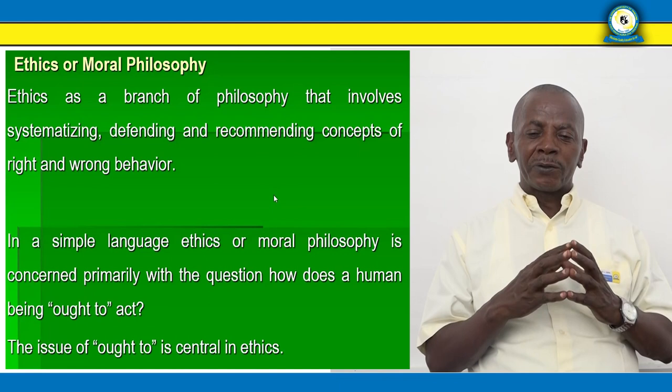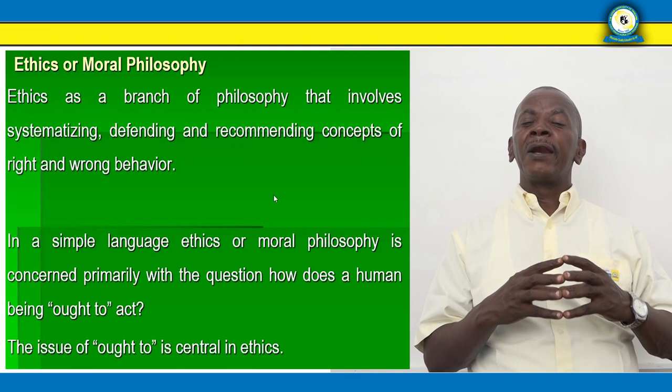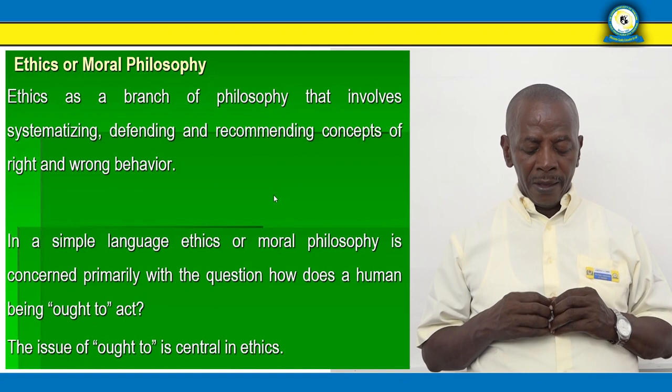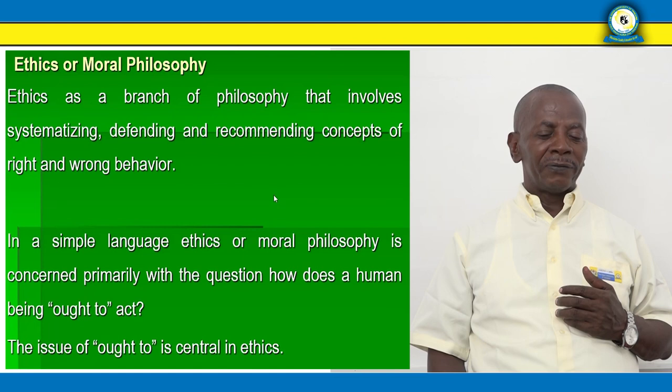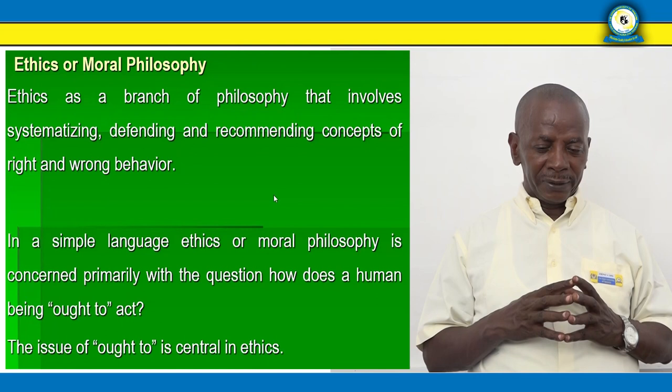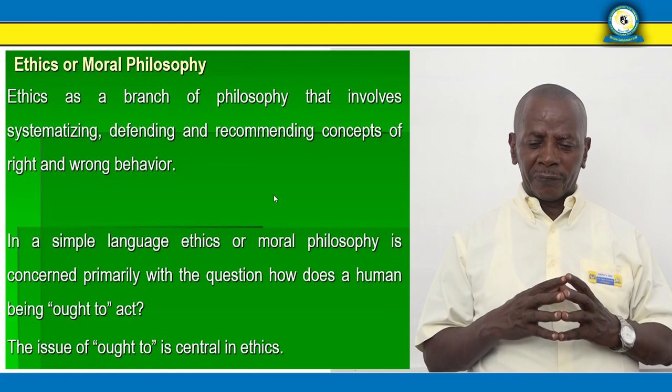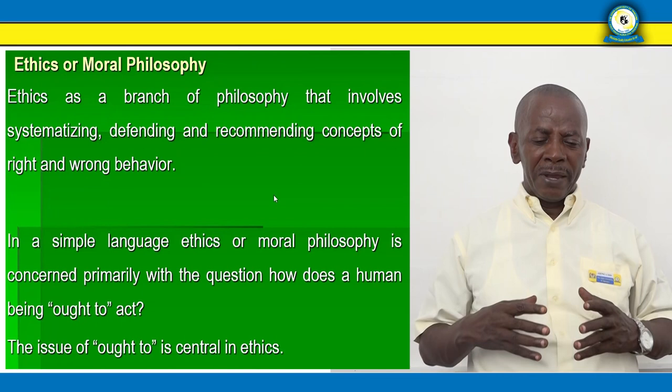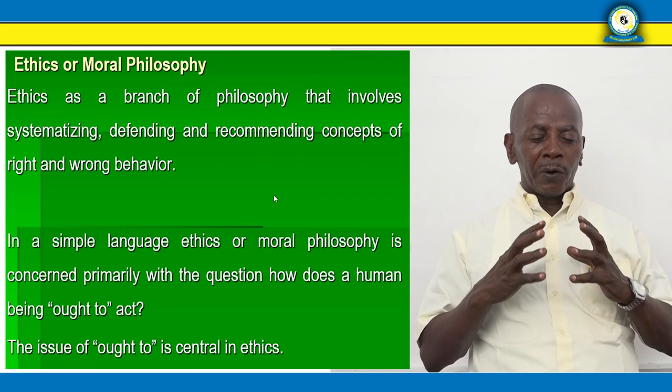Ethics as a branch of philosophy involves systematizing, defending, and recommending concepts of right and wrong behavior. Ethics is the moral built of someone — what is the behavior in you when you start cutting very good trees, when you start killing birds. In simple language, ethics or moral philosophy is concerned primarily with the question: how does a human being ought to act? The issue of ought to act is central in ethics.